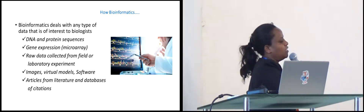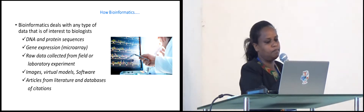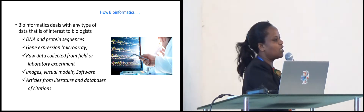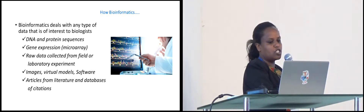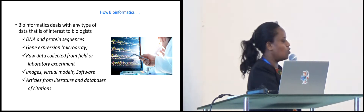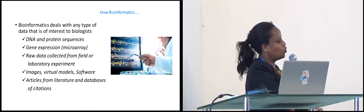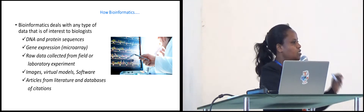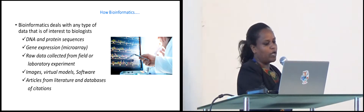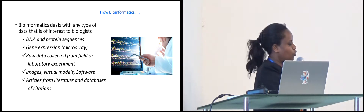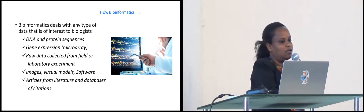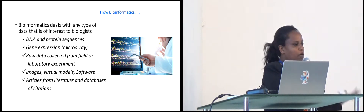Bioinformatics can deal with any type of data of interest to biologists. We can do DNA and protein analysis, protein sequence and DNA sequence from any genome of any living organism. We can do gene expression using microarray, transcriptomics or array analysis, and generate raw data collected from the field. In agriculture, it is easy to do genome-wide association research — relating phenotype in the field with the genotype of the crop, animals, or any living thing. We can even do image and virtual model software analysis, and access published articles for comparative analysis to see the current scenario in a particular field.